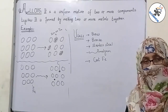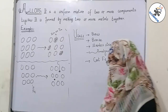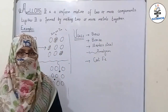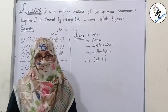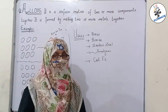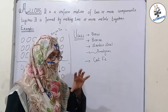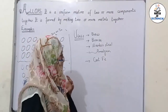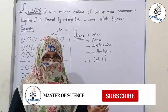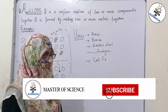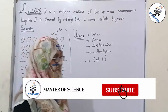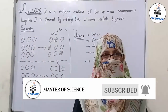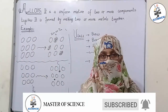Cast iron is a mixture of iron along with carbon or silicon, and based on its carbon content it can be converted into different types of iron. These are all the key points about alloys. Thank you so much.